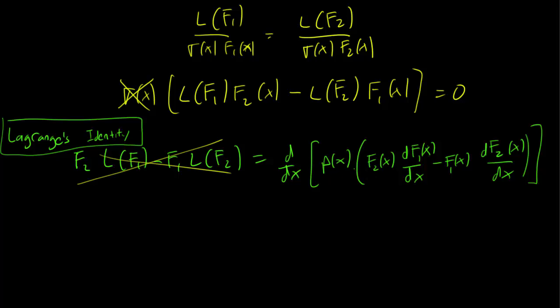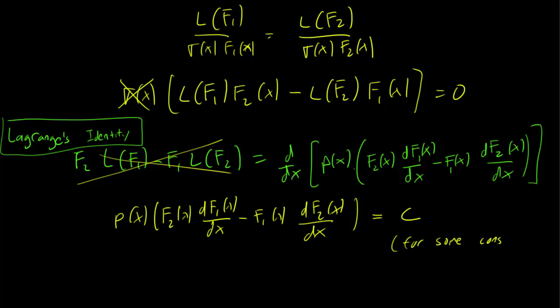And therefore, we have that the derivative of px f2x derivative of f1 dx minus f1x, that this expression has a derivative of 0, and therefore, this must equal to a constant c. Remember, the derivative being equal to 0 implies that the expression is constant, and that's what we have here.